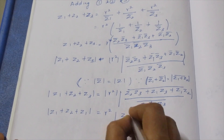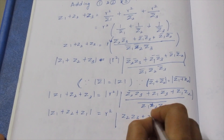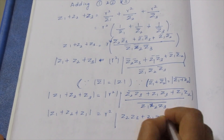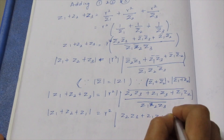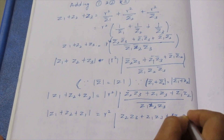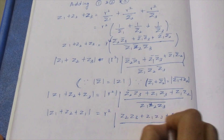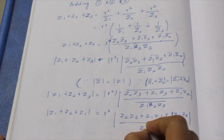This becomes: Z1 plus Z2 plus Z3 equals R squared times (Z2·Z3 plus Z1·Z3 plus Z1·Z2) divided by (Z1·Z2·Z3).